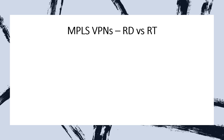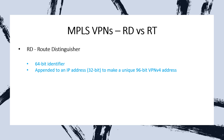A very commonly asked question in service provider interviews is the difference between an RD and an RT. Let's look at what these terms are, how we configure them, and why we need them in an MPLS VPN. The RD, or Route Distinguisher, is a community tag defined under a VRF in an MPLS Layer 3 VPN. It's a 64-bit identifier that gets appended to an IP address to make a unique 96-bit address called a VPNv4 address.